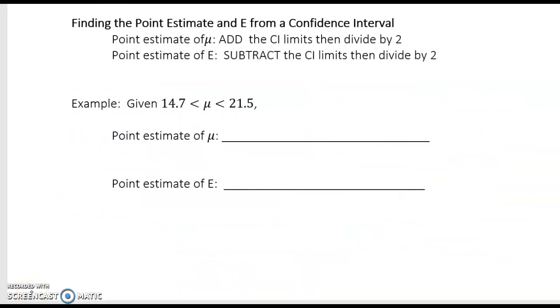Here's a summary of how to find a point estimate and an error from a given confidence interval. We just practiced with error but let's go ahead and do our example. We have given the confidence interval of mu is between 14.7 and 21.5. We want to find the point estimate of mu and the point estimate of E.